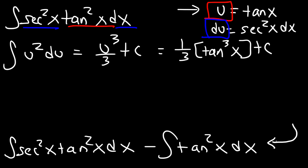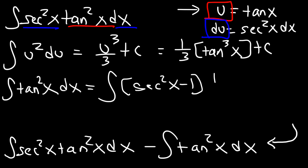Now let's move on to the second integral, the integral of tangent squared. We can replace tangent squared with secant squared minus one. The integral of secant squared is tangent because the derivative of tangent is secant squared, and the integral of negative one will be negative x plus some constant c.